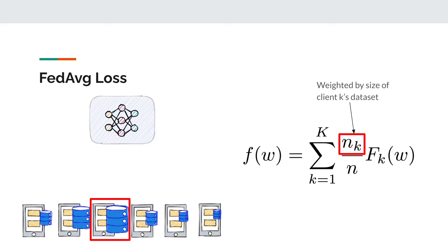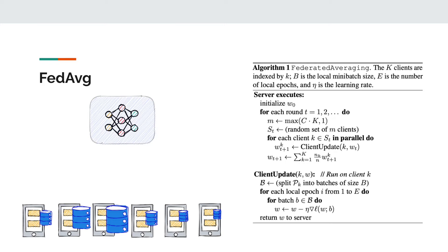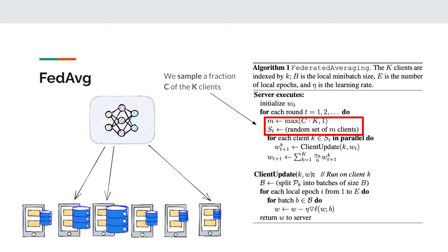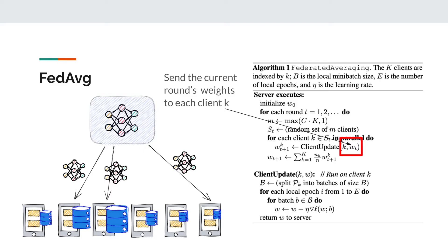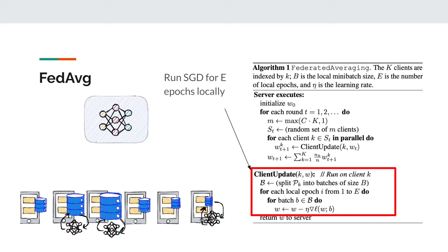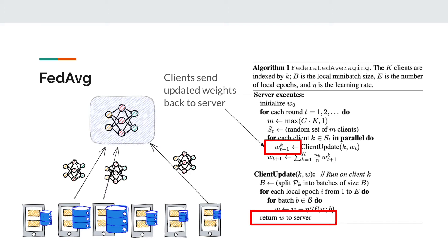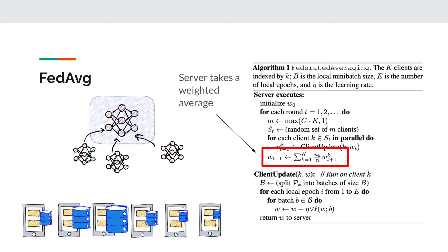Now onto the algorithm itself. We execute this algorithm for a number of rounds of training. First, we sample a fraction c of the k clients — in this case k equals 6 and c equals 0.5. We send the current round's weights to each client k; for the t-th round, the weight is denoted by w_t. The clients then run stochastic gradient descent on their local data for E epochs. Once they've done that, they send the updated weights back to the server. The server receives all the weights, aggregates them by taking the weighted average, and then we repeat for the next round.